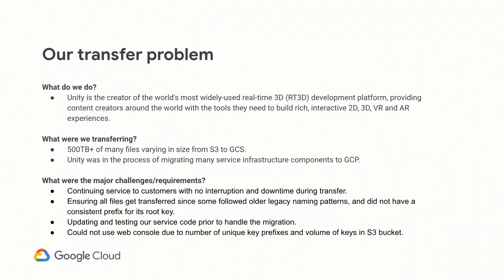Unity was in the process of migrating many infrastructure components to GCP. We had several challenges and requirements. Our first requirement was no downtime for our customers. Another requirement was ensuring that all of our files made it to the destination bucket — we had many files with an older legacy naming pattern, so we had to take extra precaution. We couldn't use the web console because of the complexity and number of files, so we utilized the STS API directly, which helped us keep track of the actual transfers as they were happening.